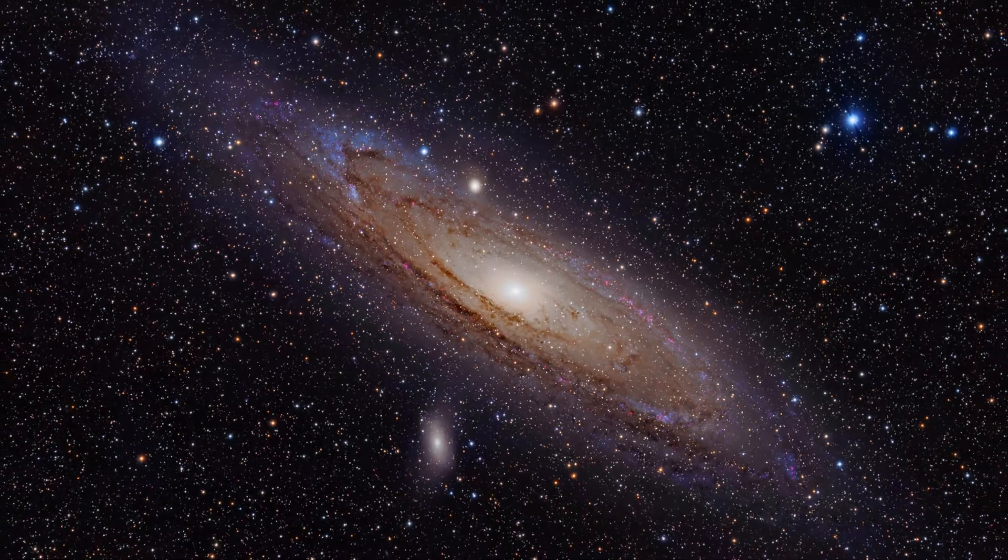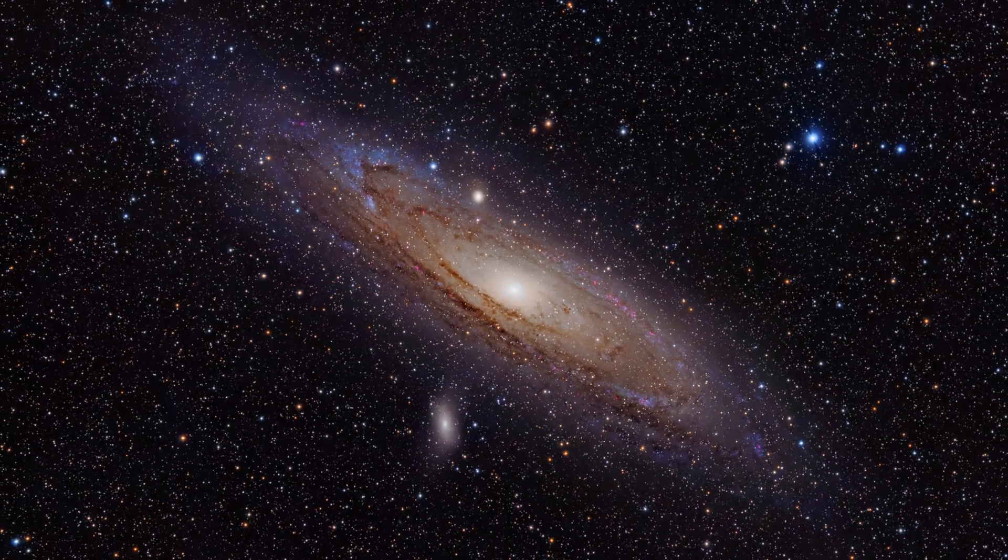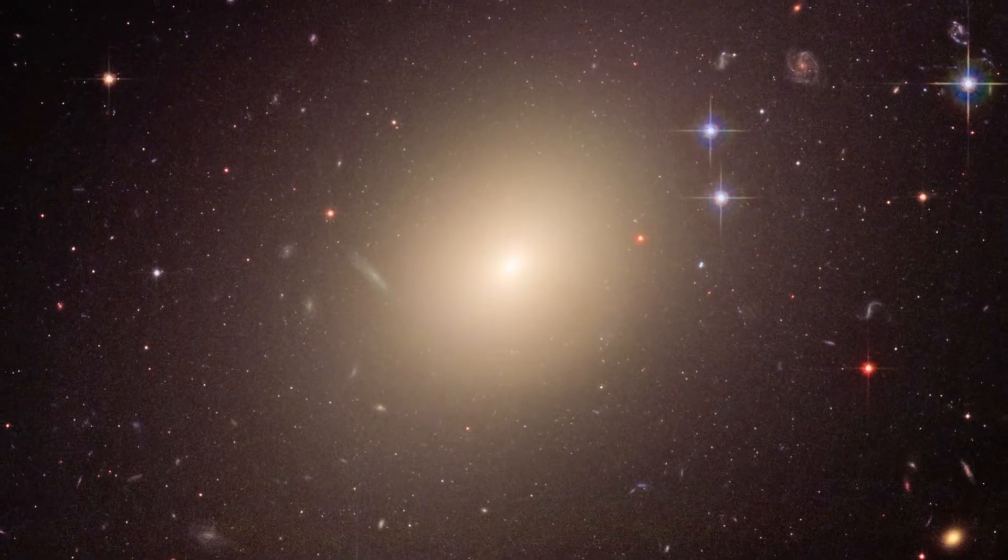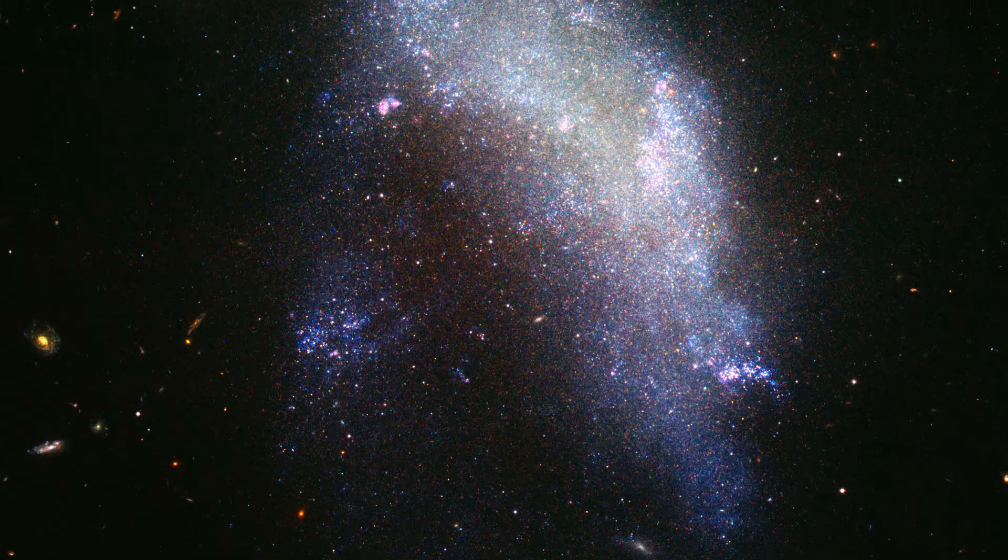Of the galaxies in Virgo, 58% are spirals, 27% are ellipticals, and the rest are irregulars.